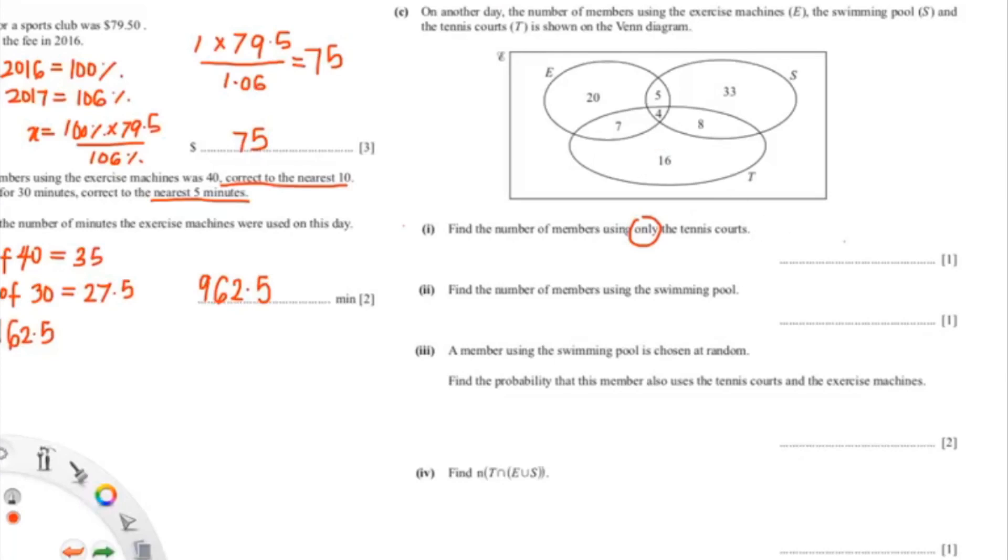Next question: find the number of members using the swimming pool. Notice how they didn't say only, so now we know it would be all of this. So 5 plus 4 plus 8 plus 33.